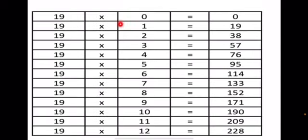19 zeros are 0. 19 ones are 19. 19 twos are 38. 19 threes are 57. 19 fours are 76. 19 fives are 95. 19 sixes are 114.